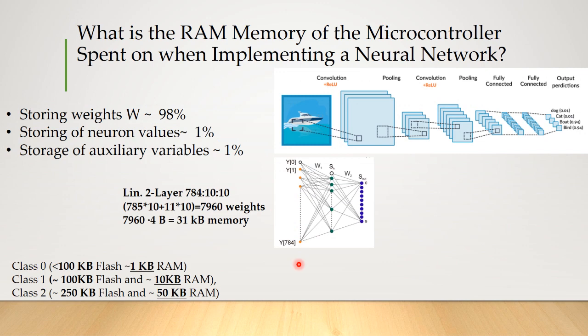Let us ask a question. What is the RAM memory of the microcontroller spent on when implementing a neural network? First, the memory is allocated to storing weights, which occupy about 98% of all required memory. Then, storing of neuron values takes about 1%. Finally, the storage of auxiliary variables and arrays occupies about 1%.